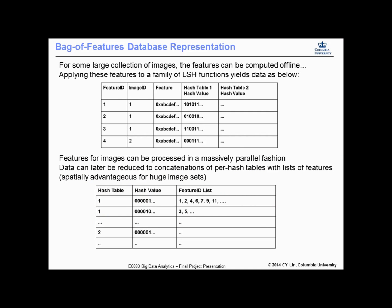After applying all these hash functions to images in our database, we can arrive at a big table like you see here at the top. For each image, we'll get a list of descriptors, and for each of those descriptors, we have a collection of hash values for each of the hash tables that we generated.